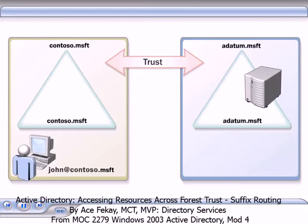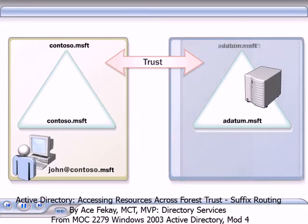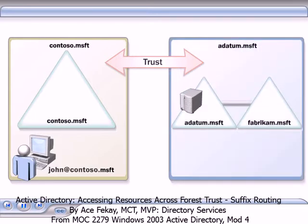When you create a forest trust, Active Directory enables routing for all non-conflicting UPN suffixes between the forests. If you create new UPN suffix names after the trust is established, suffix routing for the new suffix is disabled by default. You can manually enable routing for these suffixes in Active Directory Domains and Trusts.